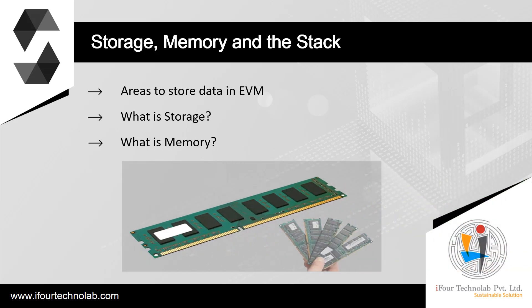What is memory? The second data area is called memory, of which a contract obtains a freshly cleared instance for each message call. Memory is linear and can be addressed at the byte level, but reads are limited to a width of 256 bits while writes can be either 8 bits or 256 bits wide. Memory is expanded by a word (256 bits) when accessing a previously untouched memory word; at the time of expansion, the cost in gas must be paid. Memory is costlier the larger it grows — it scales quadratically. Memory is only accessible during contract execution; once execution is finished, its contents are discarded. When should you use memory? For pretty much everything non-permanent — it is the general workhorse. You can think of it like a computer's RAM: it vanishes when the computer is not running.